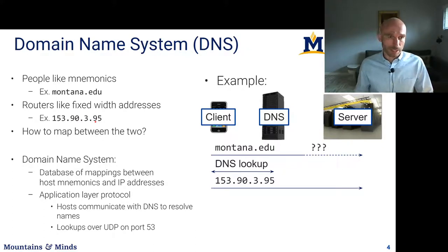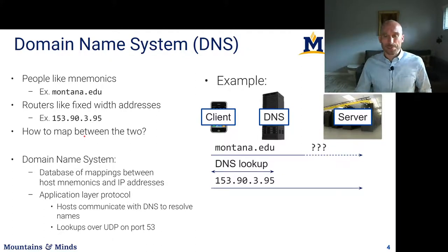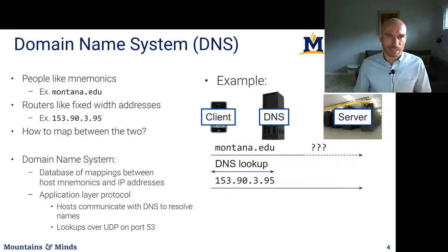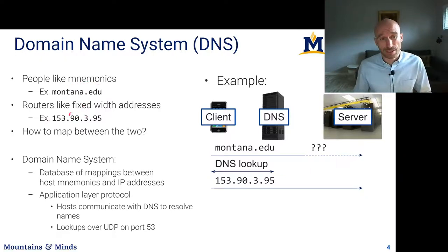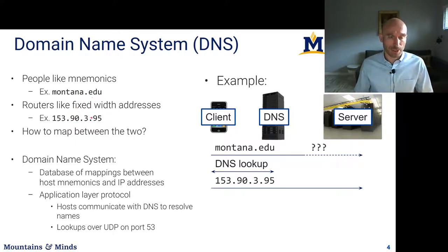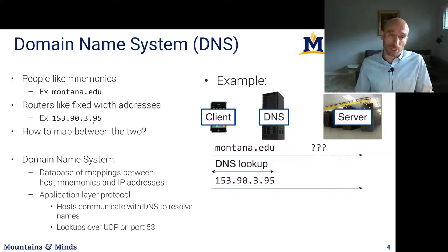For routing we want fixed-length numbers; for people to remember things we like mnemonics. There's actually more to it — this mnemonic can be more stable. We can always have the service at this address while the actual server can change IPs, which is really the convenience of DNS. It's not just that we can't remember numbers; it's that this is a stable address and the actual node address should be able to change, for example when a server fails and we need to use another server.